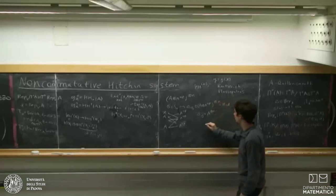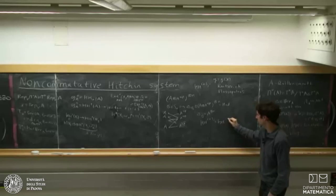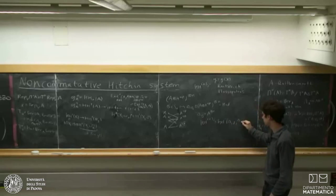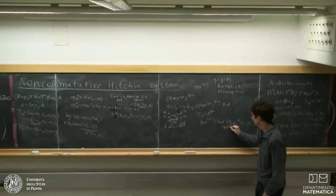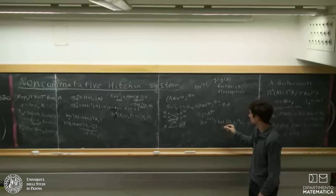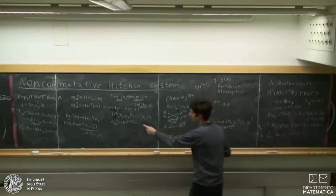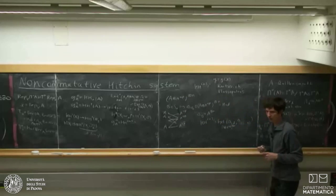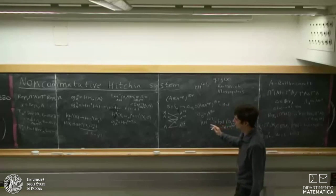To define higher Hochschild homology, one takes Ext from the bimodule corresponding to the identity permutation to the bimodule corresponding to the maximal cycle (1, 2, ..., n) over the algebra (A⊗A^{op})^{⊗n}. More precisely, GA^n is HH^n where the first n refers to the number of copies and the second n is the homological degree, so it is the n-th Ext here. This is also functorial under localizations.